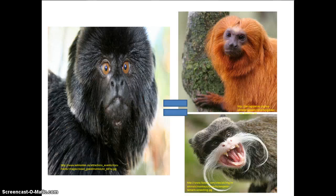In favor of the Callitrichid grouping, primatologists point to three main reasons. First, the Calamico has similar dental morphology to the Callitrichids for harvesting exudates. Second, the Calamico has similar body size, shape, and resting metabolic rate to Callitrichids. And lastly, the Calamico occupies similar ecological niches to marmosets and tamarins.